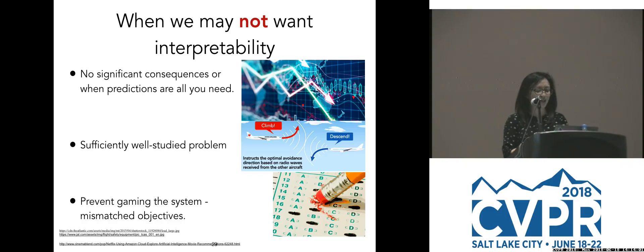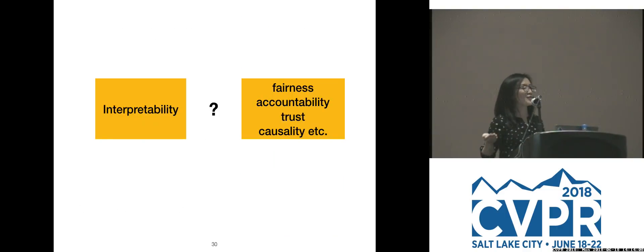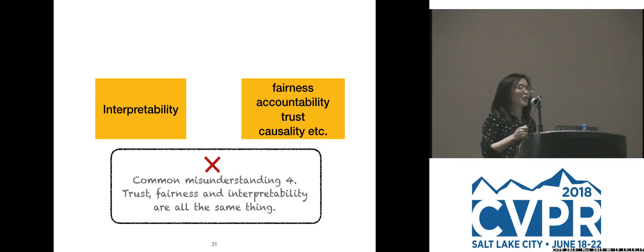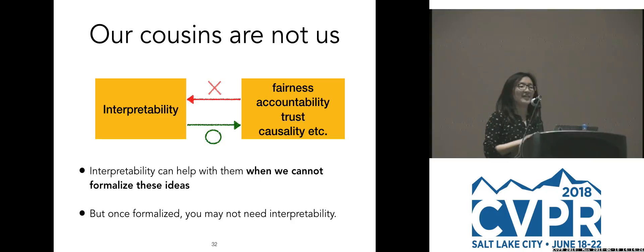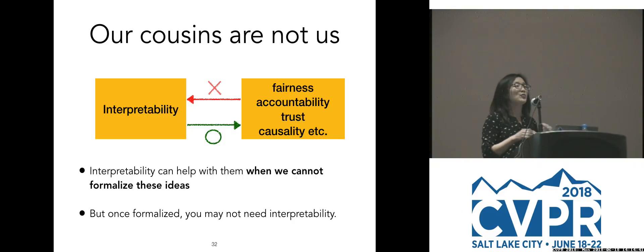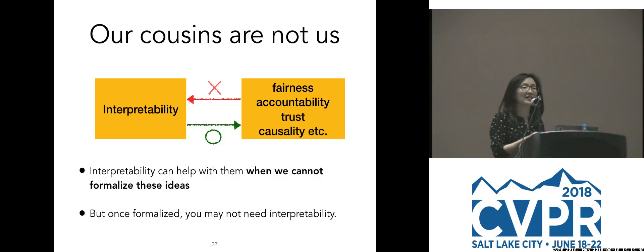If you need interpretability for your problem, it doesn't automatically come with fairness, accountability, trust, and causality. These are important topics to study, but they're not the same thing — we call them cousins. You can have perfect fairness under your favorite definition and optimize for it, and you may not need interpretability at all in that process. And vice versa: you can achieve perfect interpretability but still not have built a fair system. So they're different.